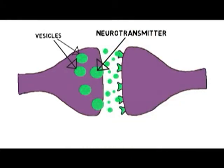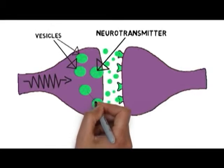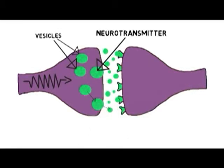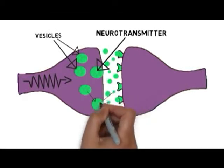When the presynaptic neuron is excited by an electrical signal called an action potential, this causes the vesicles to fuse with the presynaptic membrane and release their contents into the synaptic cleft.